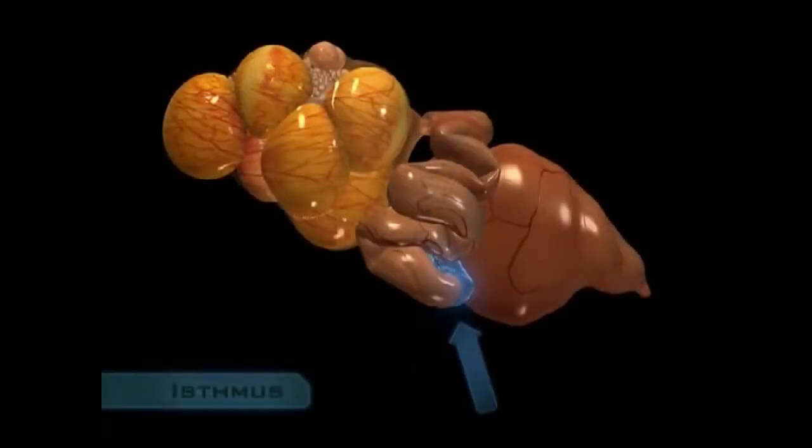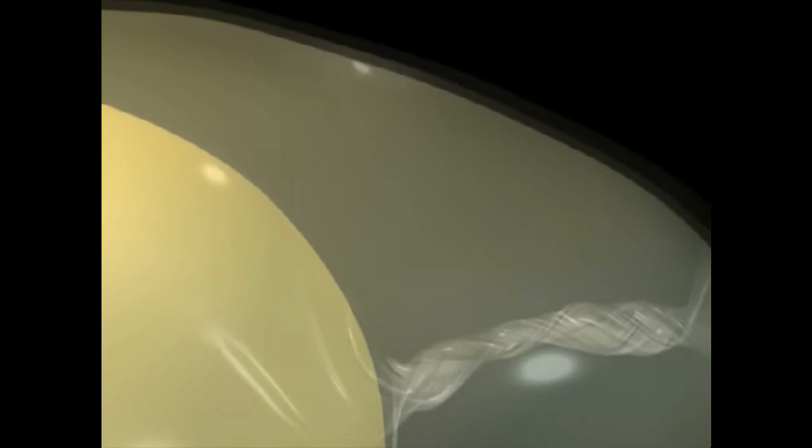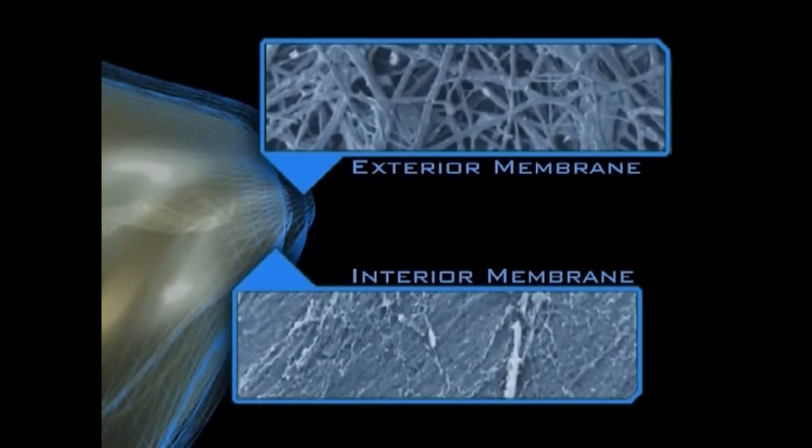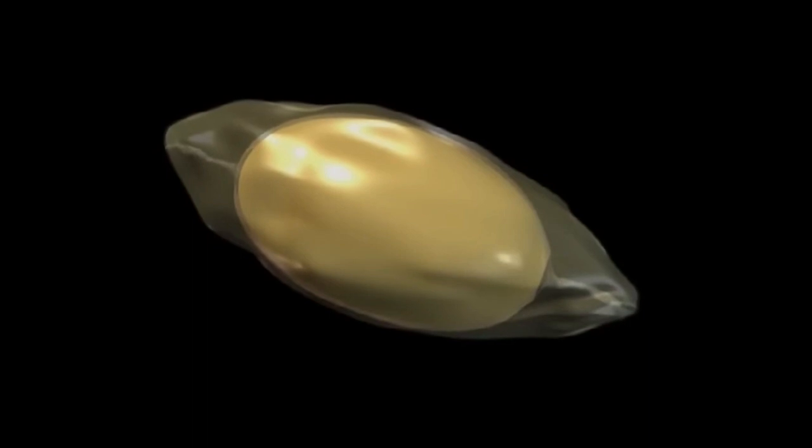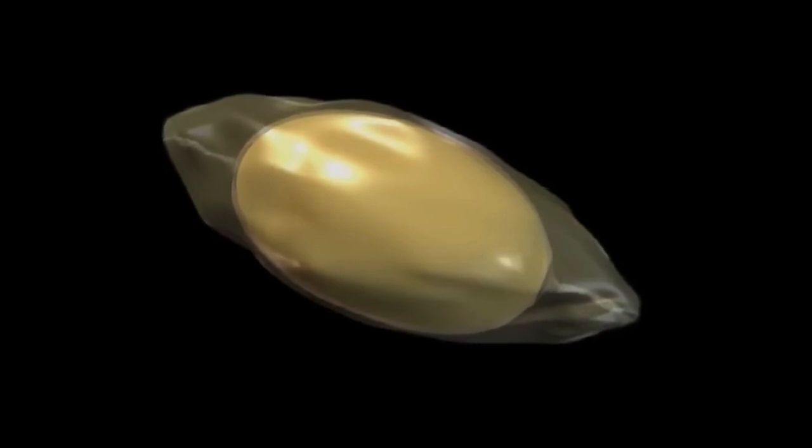The magnum gives way to the next section of the oviduct, the isthmus. Here, the shell membranes are deposited. These thin layers of protein wrap loosely around the albumin, covering the yolk. It is as though the yolk and its layer of albumin are a blob of Jell-O, wrapped with two sheets of cellophane. The process does not result in a smooth, egg-shaped structure. In fact, an egg leaving the isthmus probably looks more like a prune than a plum.